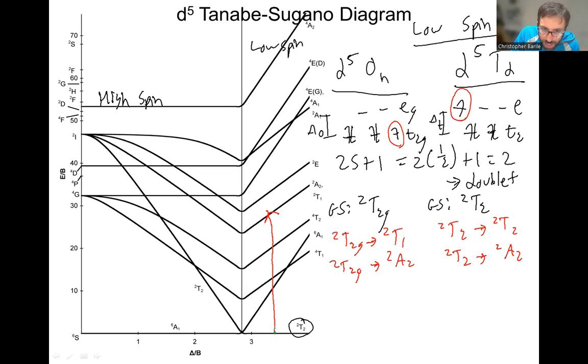Next one, we look for our next doublet, which is a doublet E. And I drew this at the same position here, because when we're talking about one complex, it's going to have the same ligands, so it's going to have the same delta.